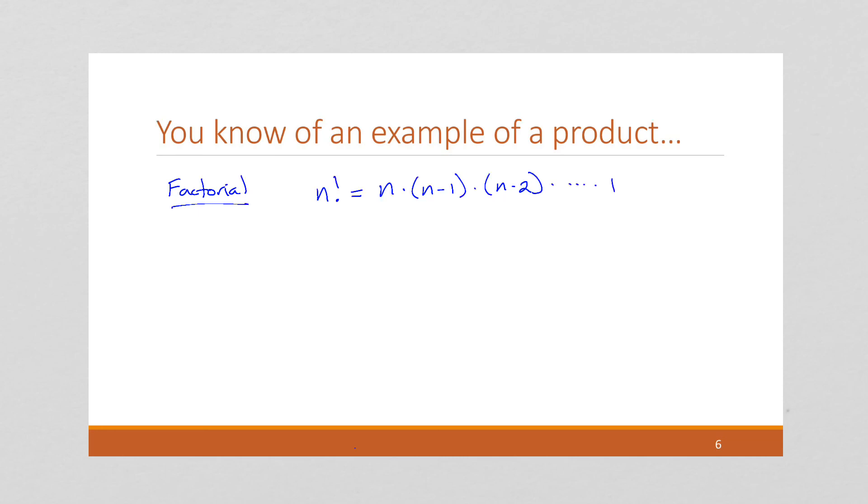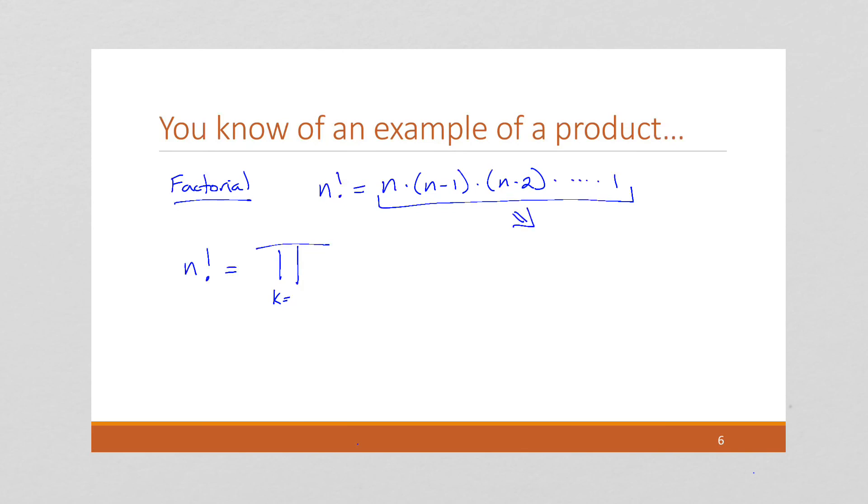Well, another way of writing that is to say this is the product, n factorial equals the product of, where do we start? Now notice this is in reverse order, and products we normally think about being in the other order. So I could rewrite this as 1 times 2 times 3 times all the way up until we get to n minus 1 times n.